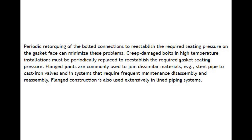Flanged joints are commonly used to join dissimilar materials, e.g. steel pipe to cast iron valves, and in systems that require frequent maintenance disassembly and reassembly. Flanged construction is also used extensively in lined piping systems.